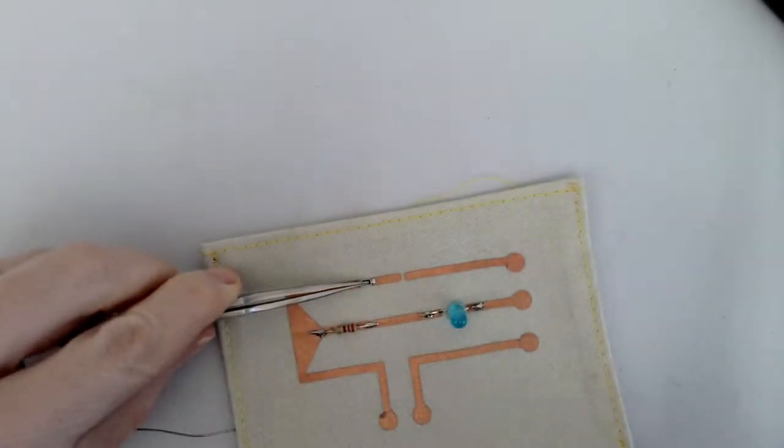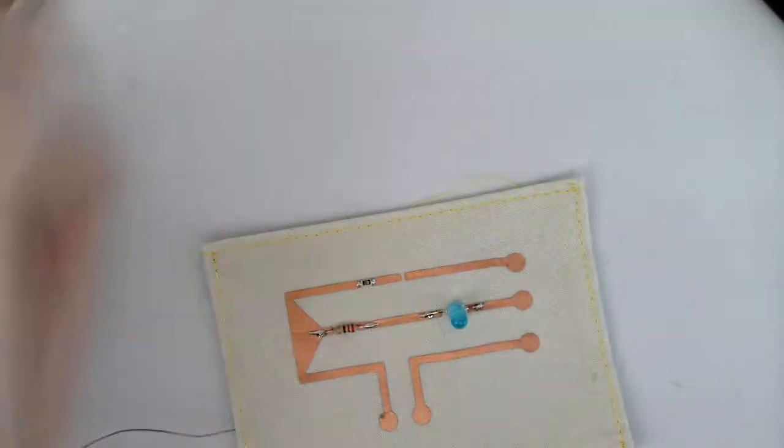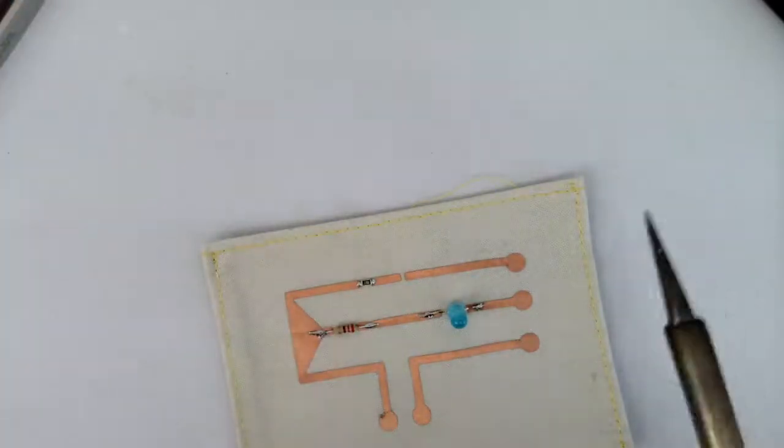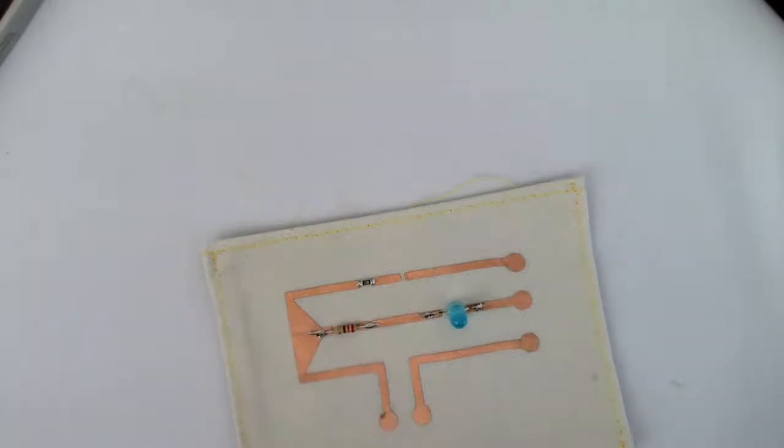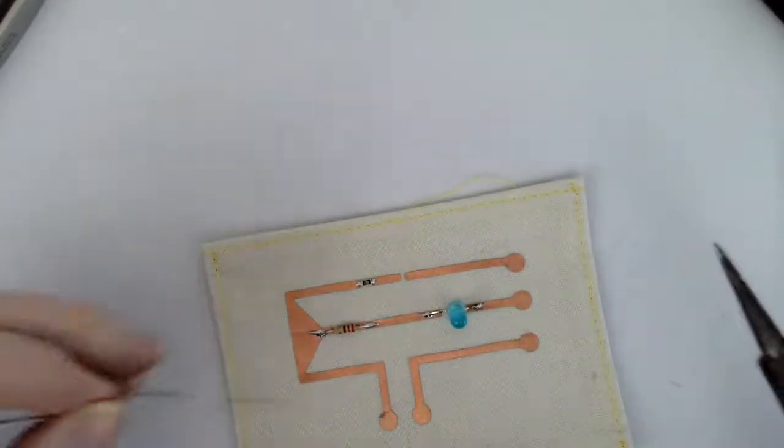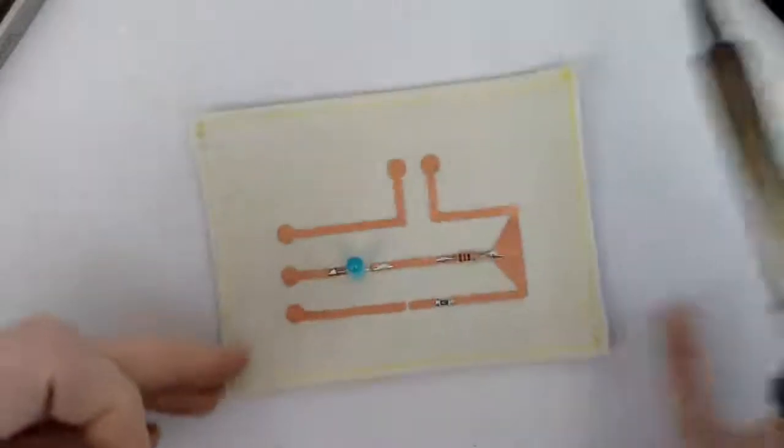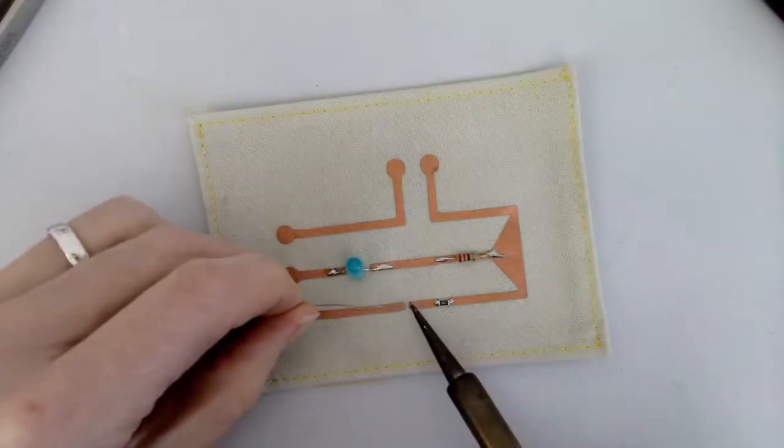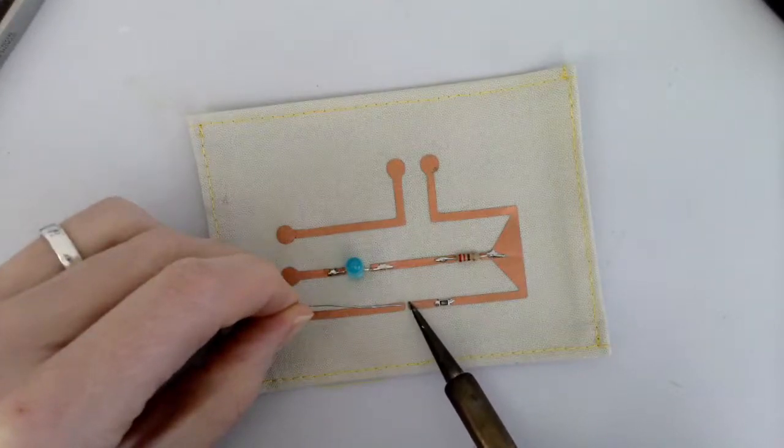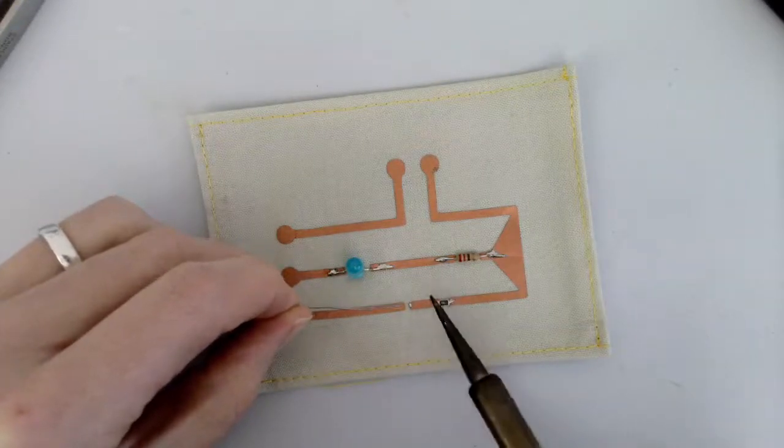So we'll do the same thing. I'm just gonna go ahead and use the same technique on the other side given the success we had with it on our resistor. So I'll just put a little tiny bit on my soldering iron. There we go. Perfect.